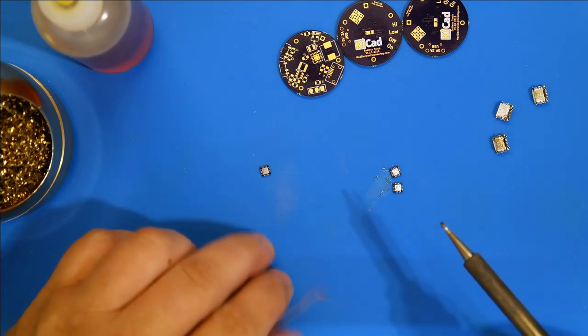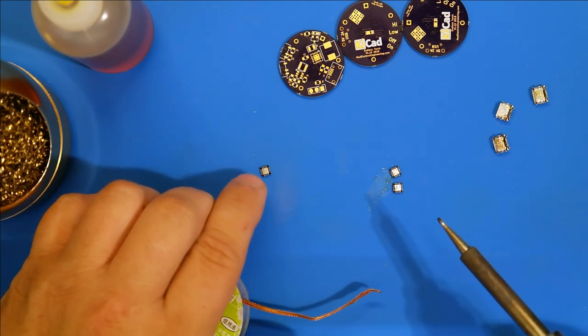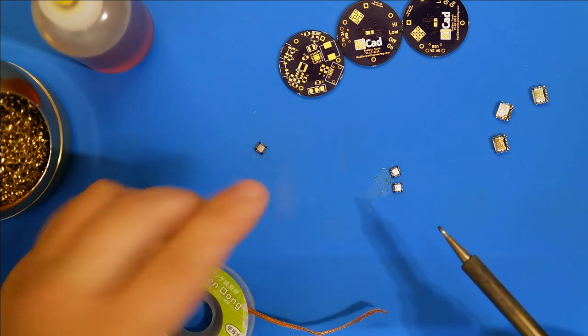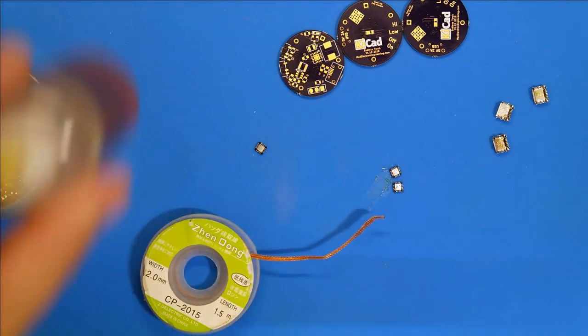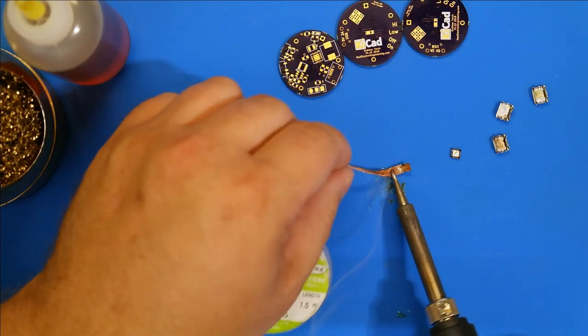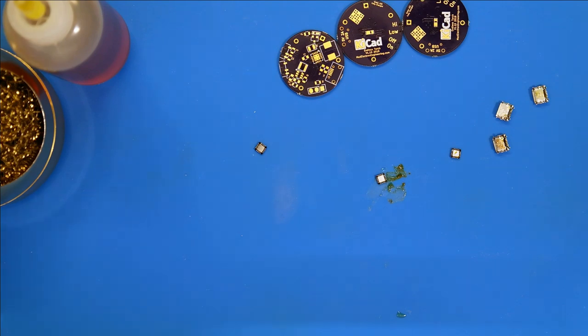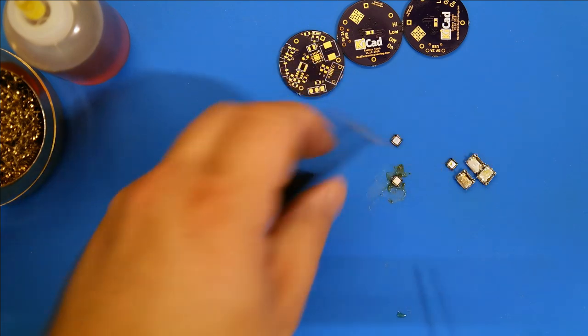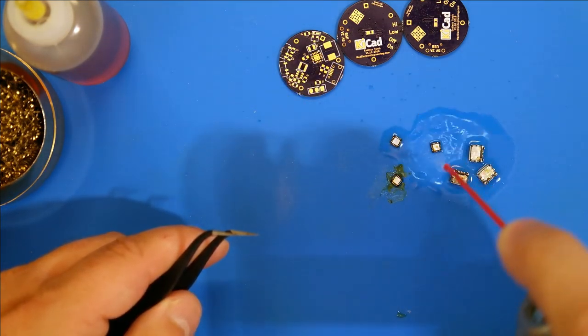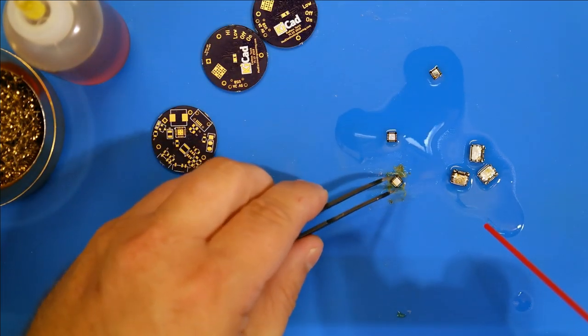We basically want to get most of the solder off that center cooling pad, otherwise when we put the new solder paste on it's going to build up too much and it has the possibility of shooting out during reflow and hitting each one of these pins and shorting out the whole chip. Nicely cleaned up, now we just got to hit them with a little bit of electronics cleaner to clean off the flux.